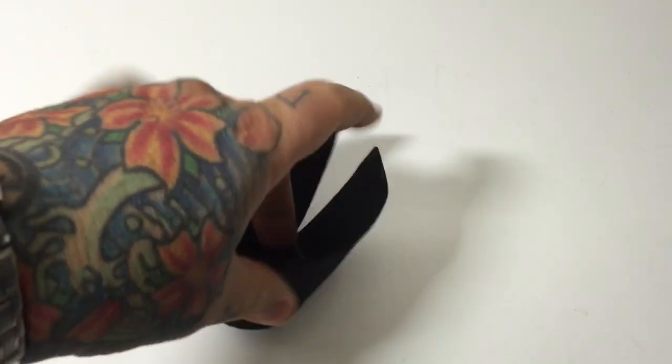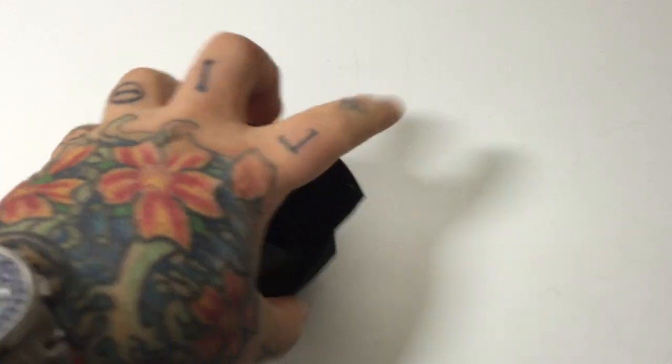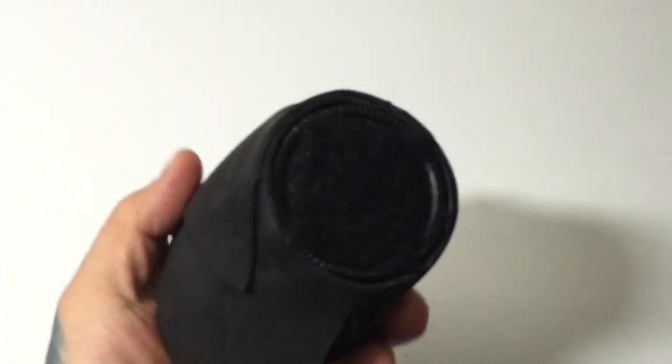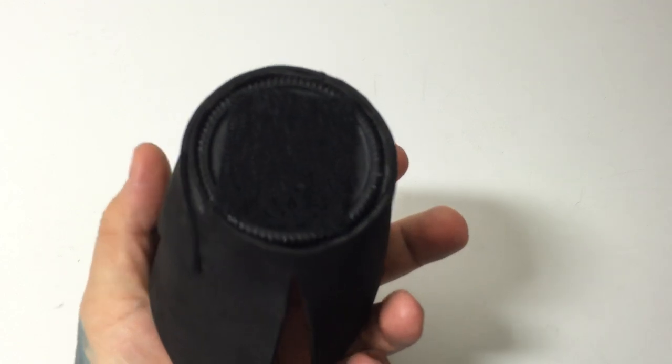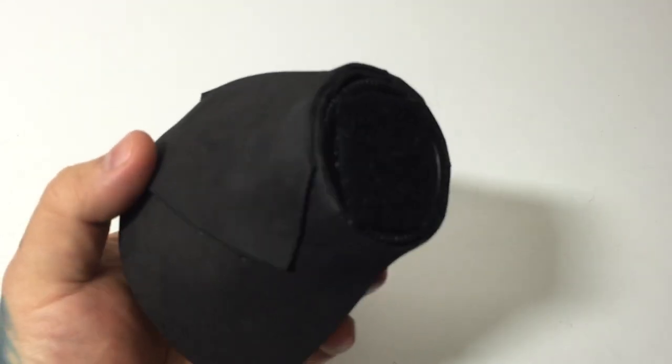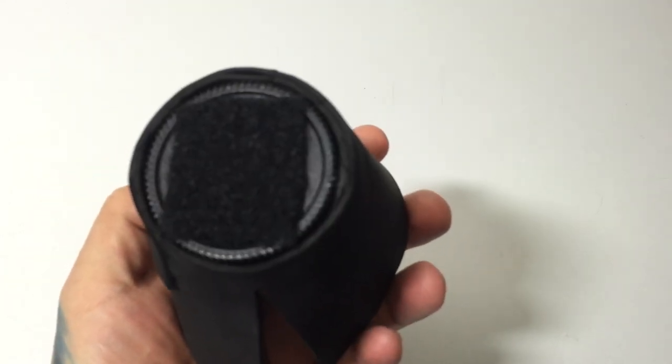The reason it's split like this is so that any size lens will fit. I used a piece of foam and just super glued it to the lens cap. The only mod you have to do is attach the Velcro to the lens cap.